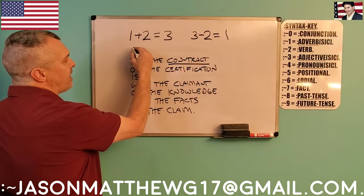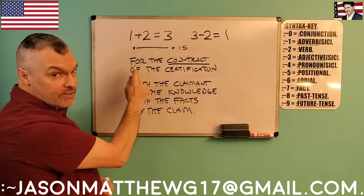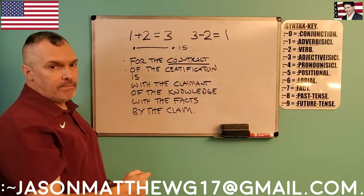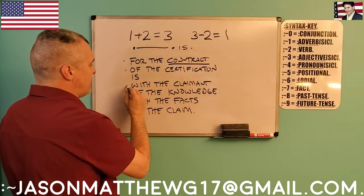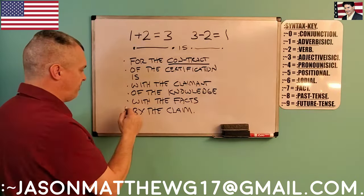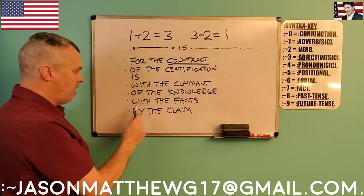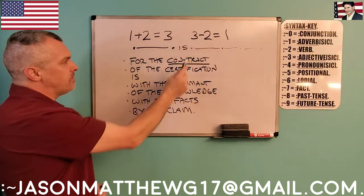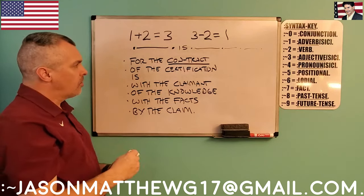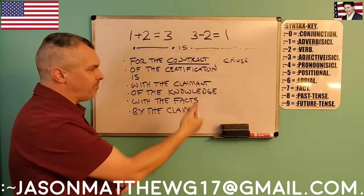Because you need two points with which to establish a straight line. Now you can put your verb in. This is the cause of the sentence: 'For the contract of the certification' — two positional phrases — then you put your verb in. Now you can put your possessive in: 'with the claimant of the knowledge,' and so on. When you read it backwards the same thing applies: 'For the claim of the facts' — then you put your verb in — 'is with the knowledge of the claim with the certification by the contract.'